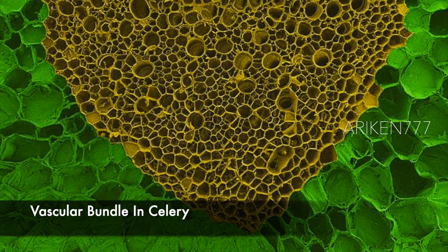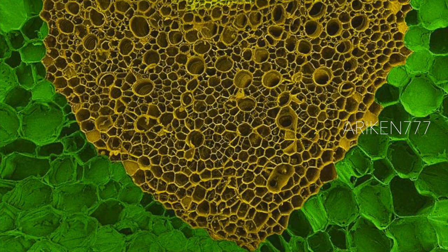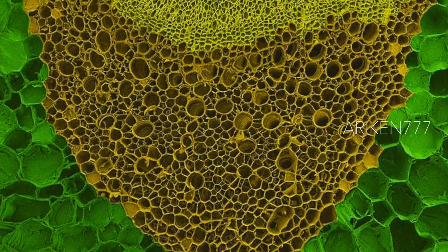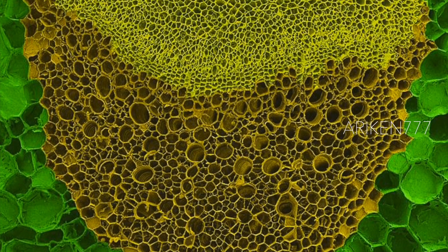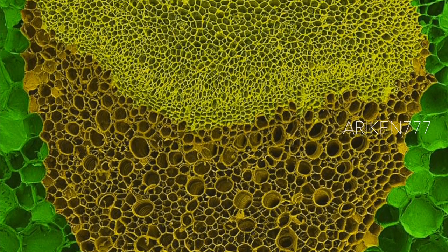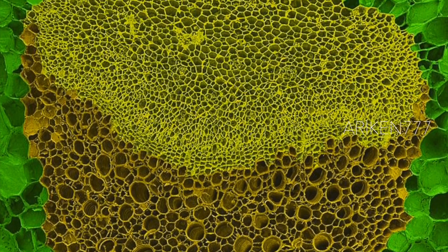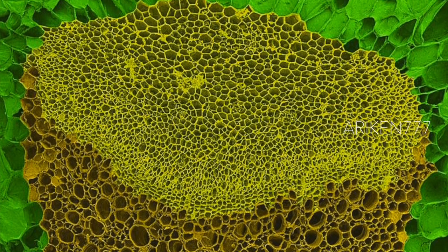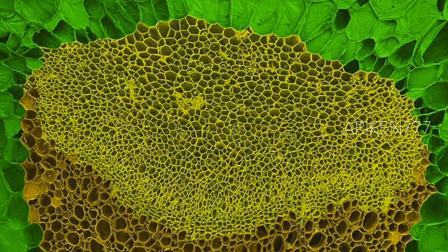Vascular bundle in celery. Celery stalks have numerous vascular bundles which act as a transport system. Shown here is a single vascular bundle in a celery stalk. The vascular bundle contains two types of conductive tissue: phloem, seen in the top area, and xylem, in the lower area. Phloem is tissue that transports larger organic molecules through the plant. Xylem is tissue responsible for transporting water and nutrients through the plant.